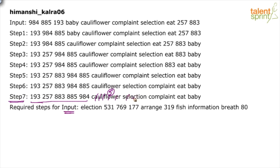Cauliflower has 5 vowels. Selection has 4 vowels: E, I, O. Complaint has 3 vowels. Eat has 2 vowels, and baby has only 1 vowel. So the words are arranged in descending order of vowel count. Numbers are in ascending order, and words are arranged based on number of vowels.